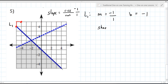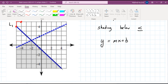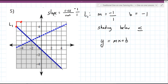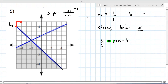Next question: are you shading above or below line one? Below. So that's a less than, and then you ask yourself — is it a solid or dashed line? It's solid. So that's a less than or equal to. You start by writing y = mx + b, but you replace the equal sign because it's an inequality. Substitute the number in for m and the number in for b.